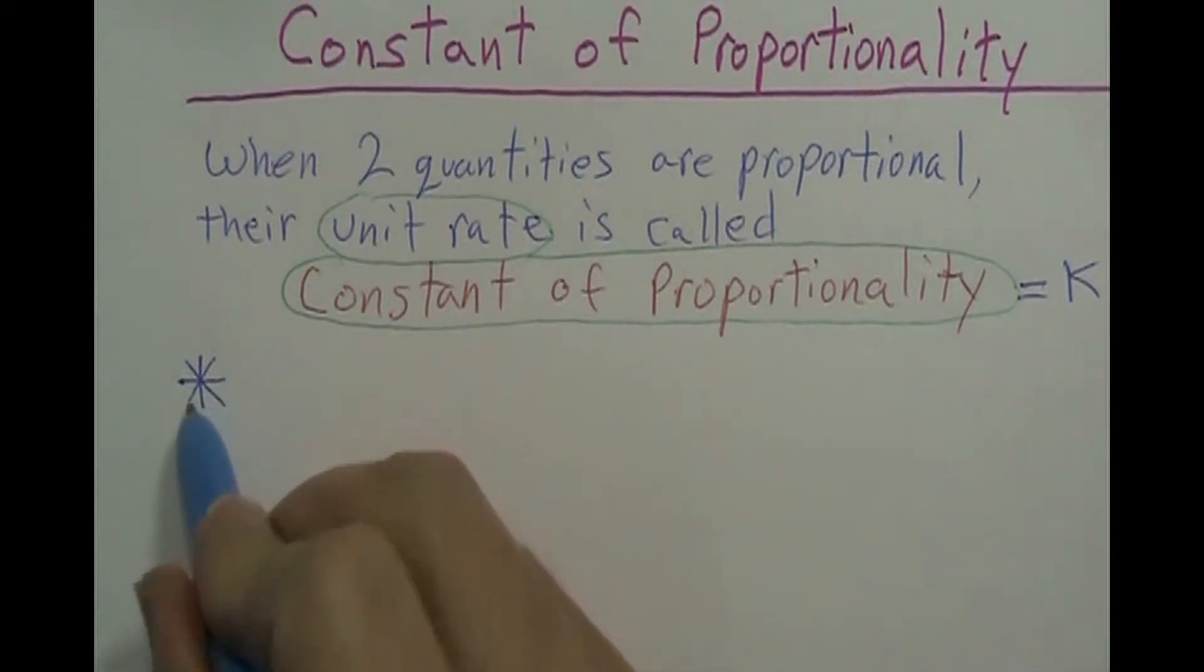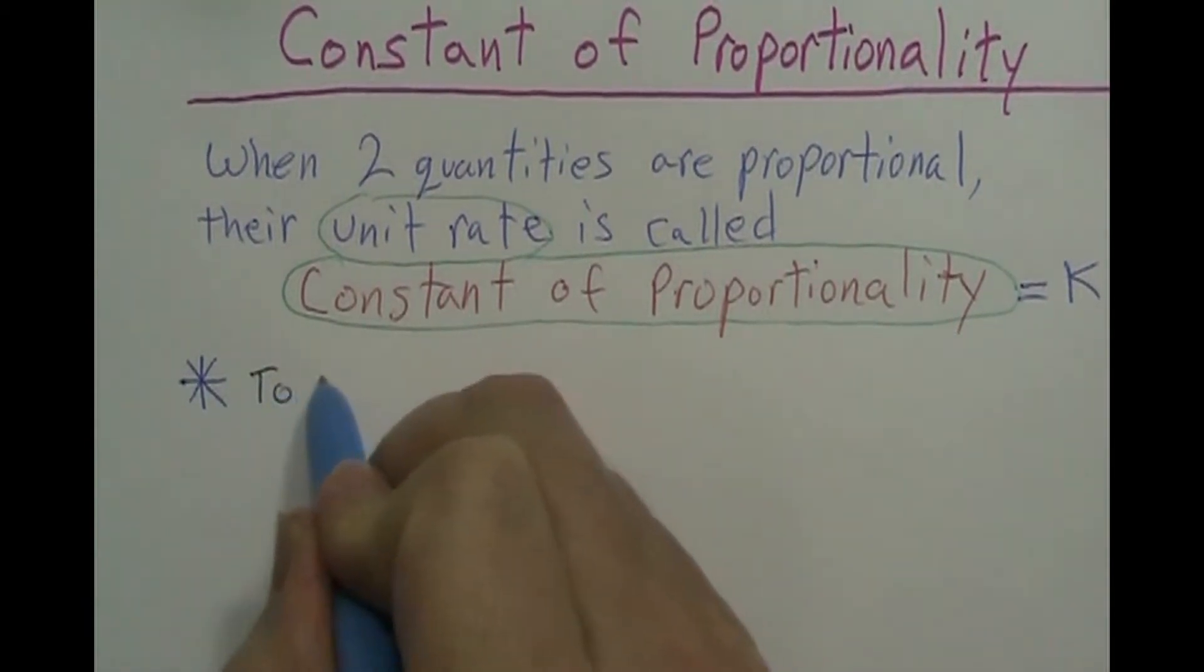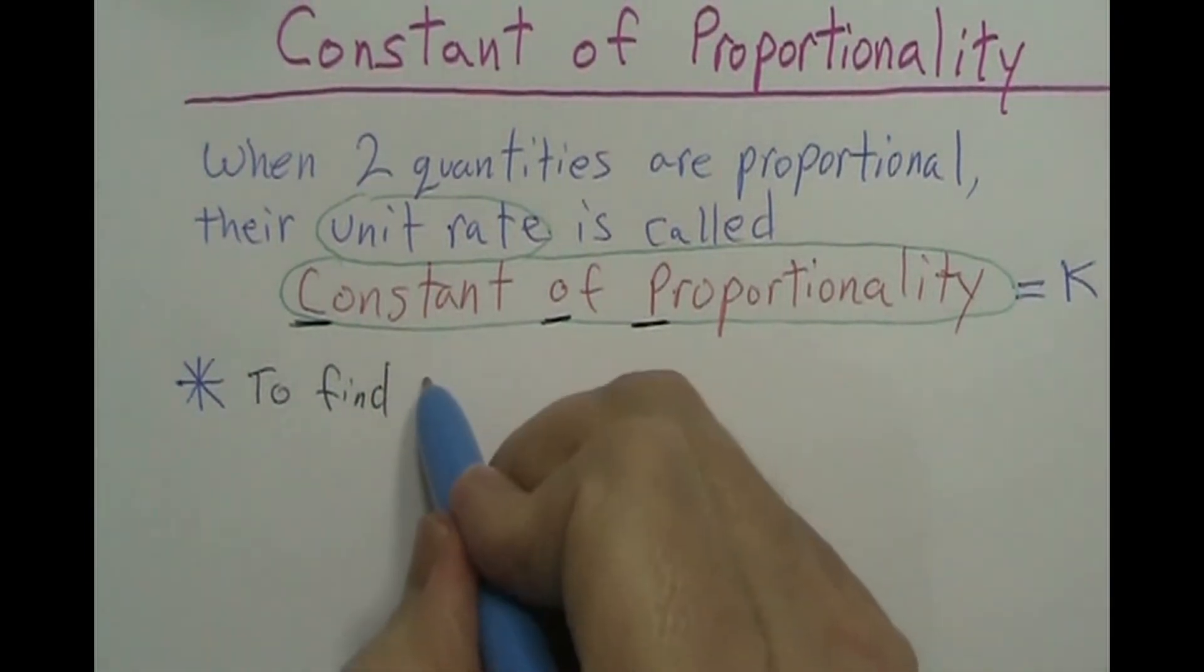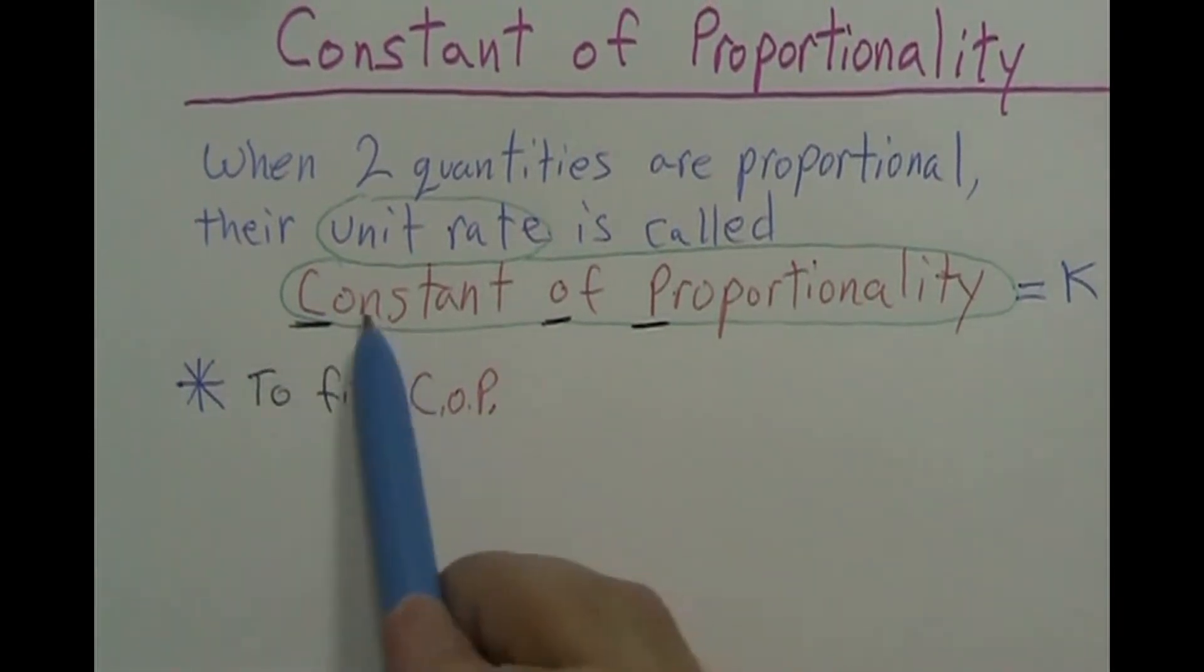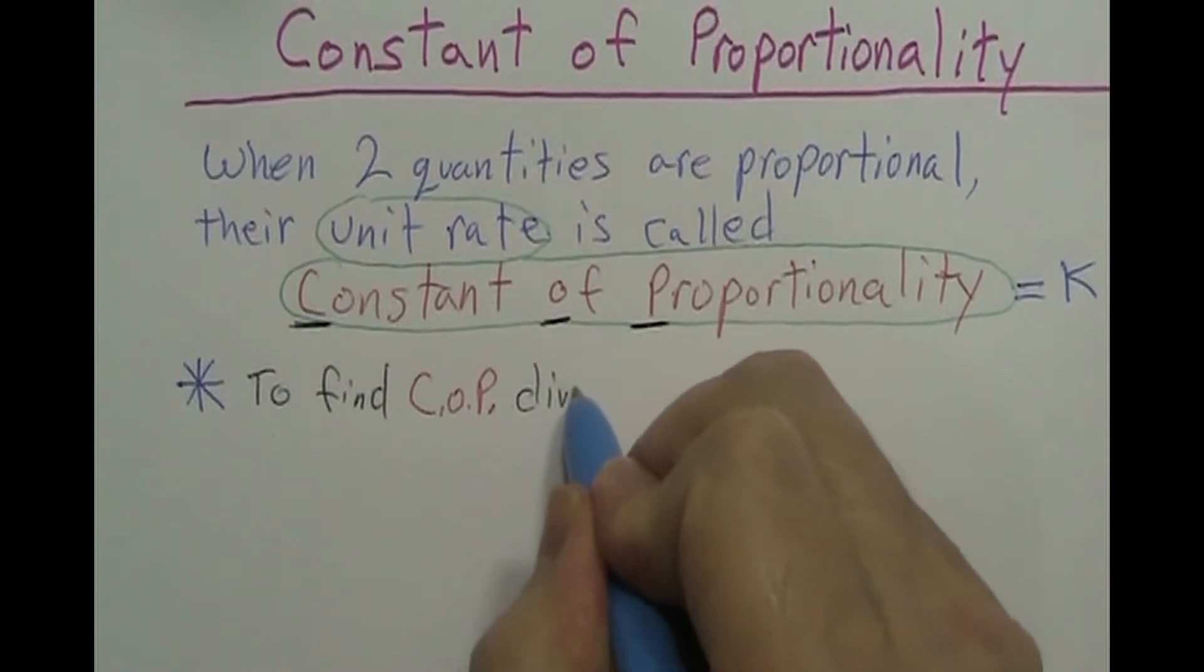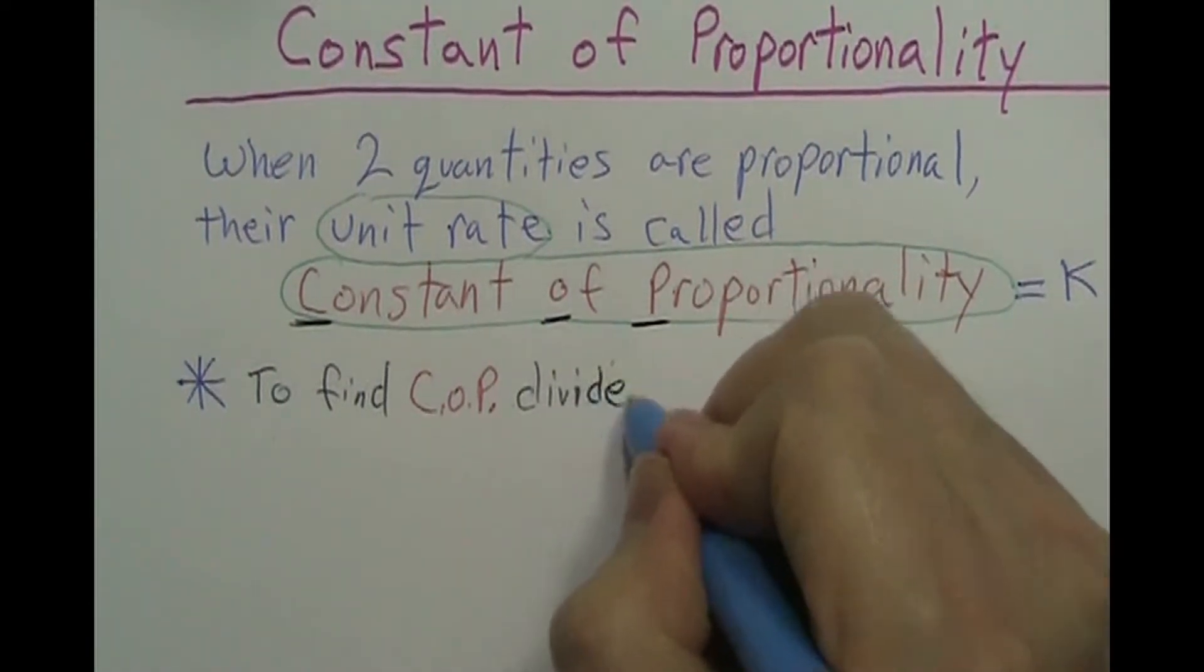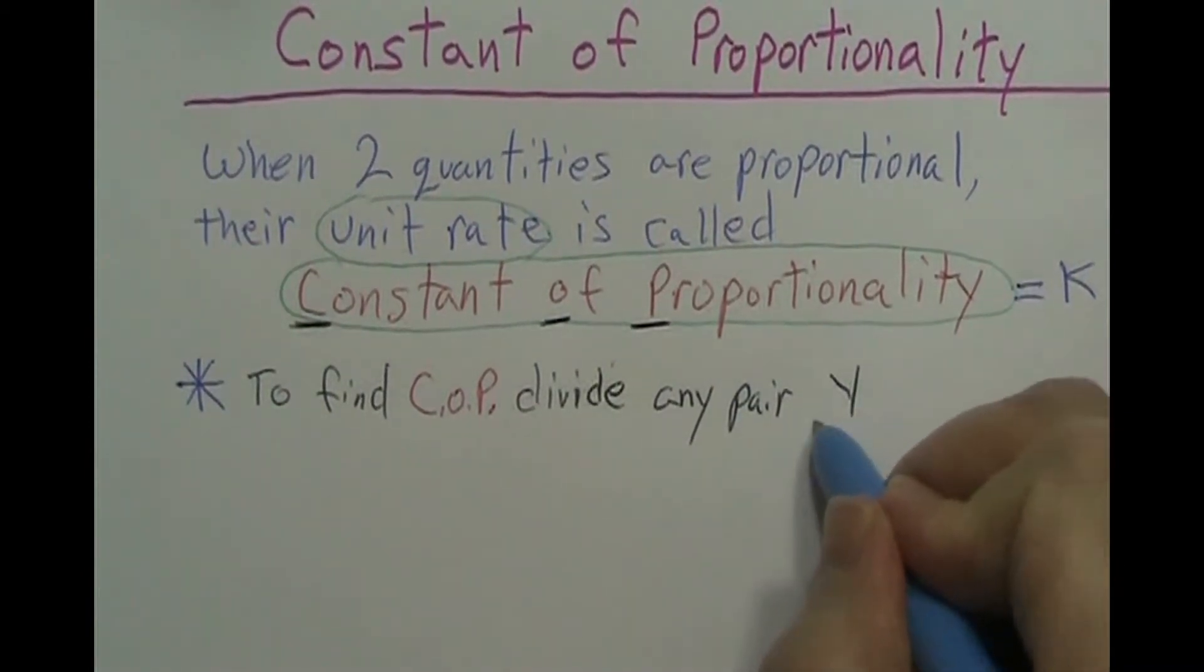All right so how do we find this? And I put a little star or asterisk right there. Okay so I'm going to say to find, actually you're going to calculate. Now I'm going to use these COP, to find COP, constant of proportionality because I certainly don't want to write all that out. What do we do? Divide. Why can't I spell? It's late. Divide any pair y over x.